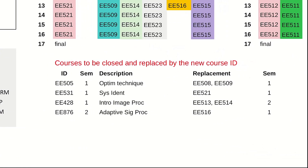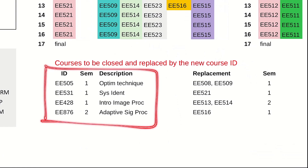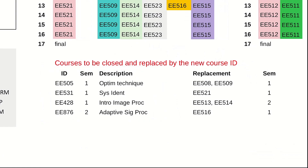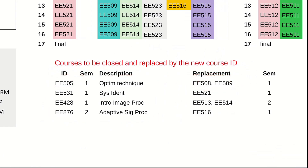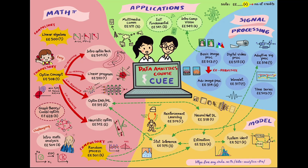For existing students who entered the EE department before 2023, you are under the existing study program. All those courses listed in the old program — course 505 is all about optimization — but now you can enroll in courses 508 and 509 instead. For undergraduate students, you can take the yellow compulsory courses and other courses amounting to 12 credits.